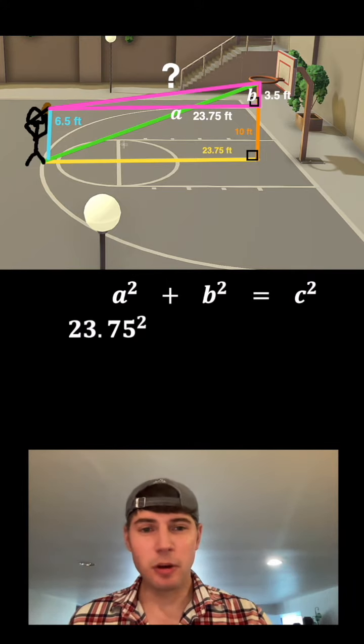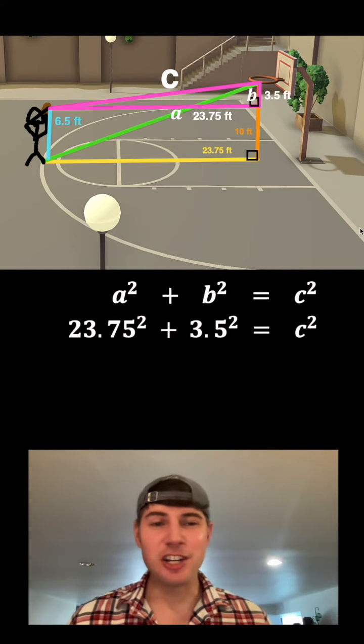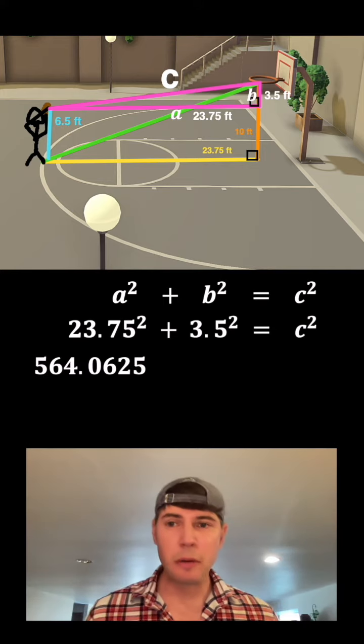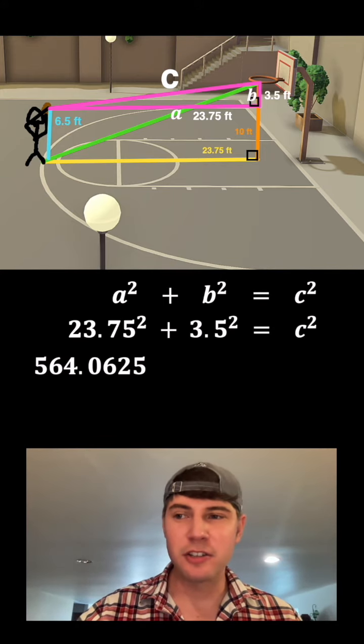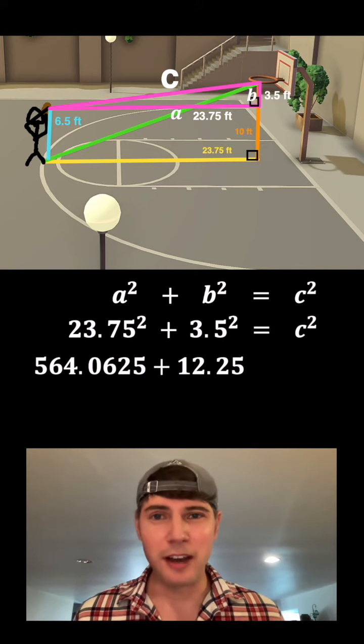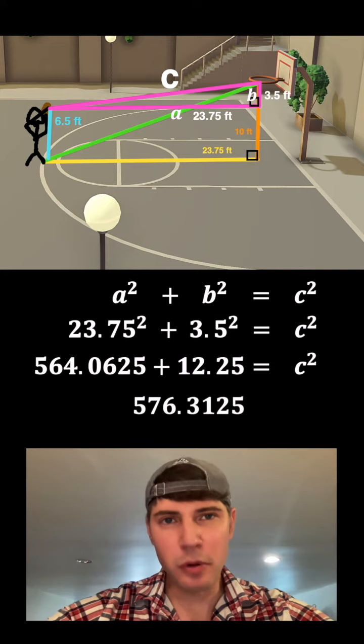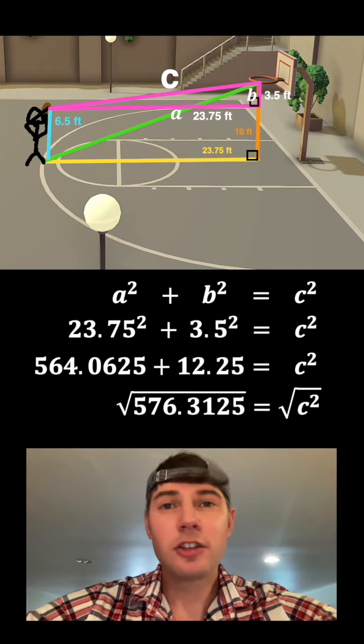So I'll plug in 23.75 for the a, 3.5 for the b. Let's change this question mark into a c. 23.75² is equal to 564.0625, plus 3.5² which is 12.25, and that's still equal to c². Add those together, we get 576.3125 = c². Square root both sides and we get approximately 24.0065.